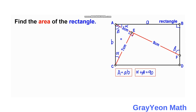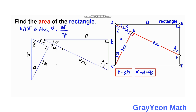Let us compare the two triangles ABF and triangle AEC. We focus on the angle alpha for both of the triangles, and we look at the ratio of the adjacent side to the hypotenuse.